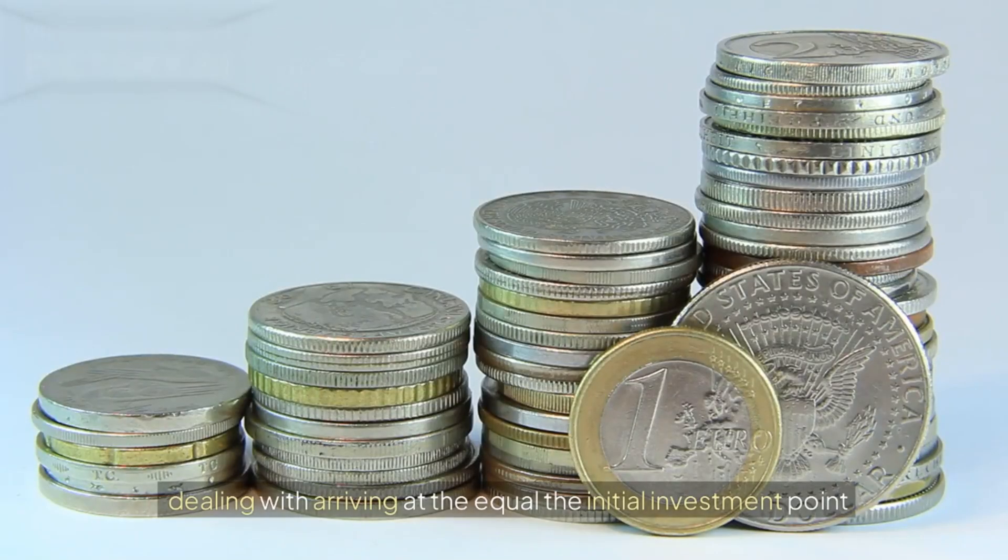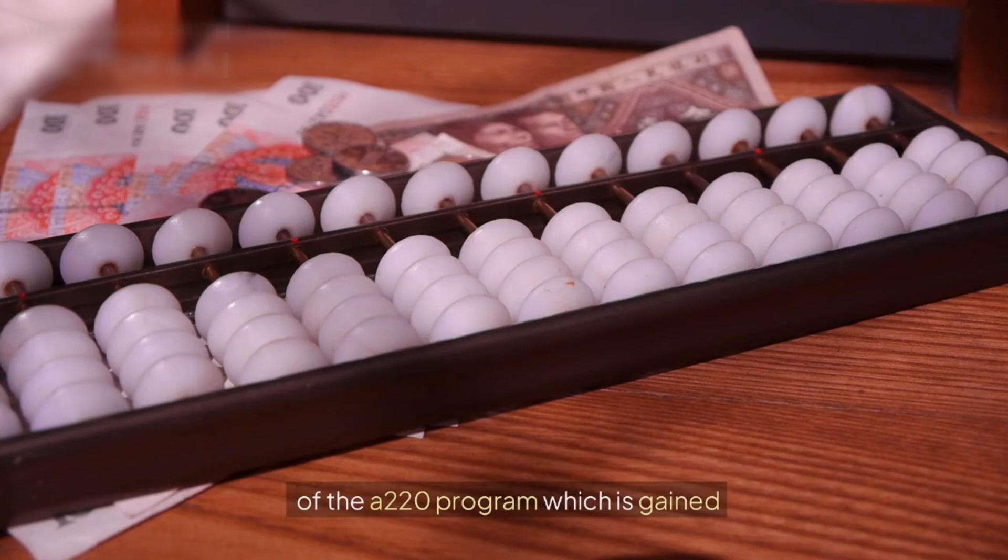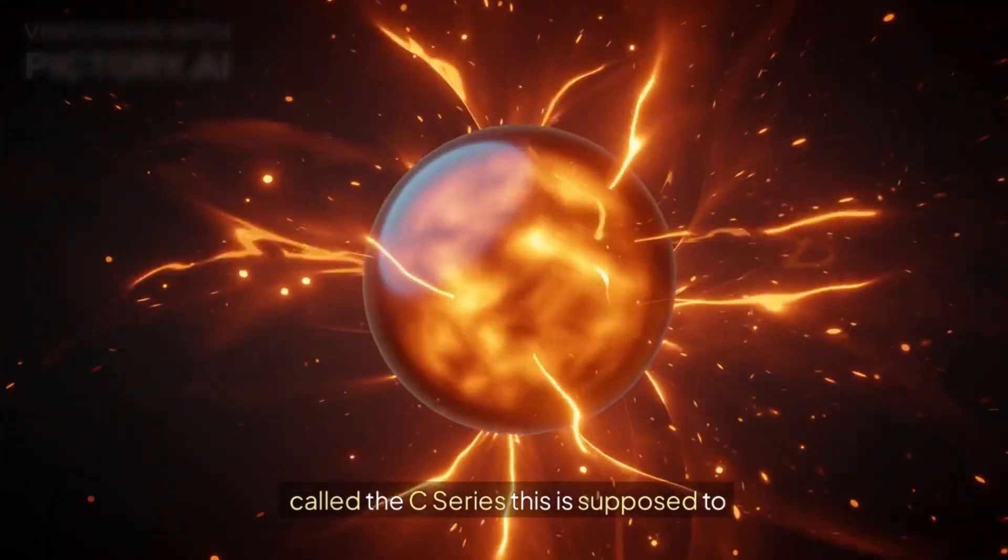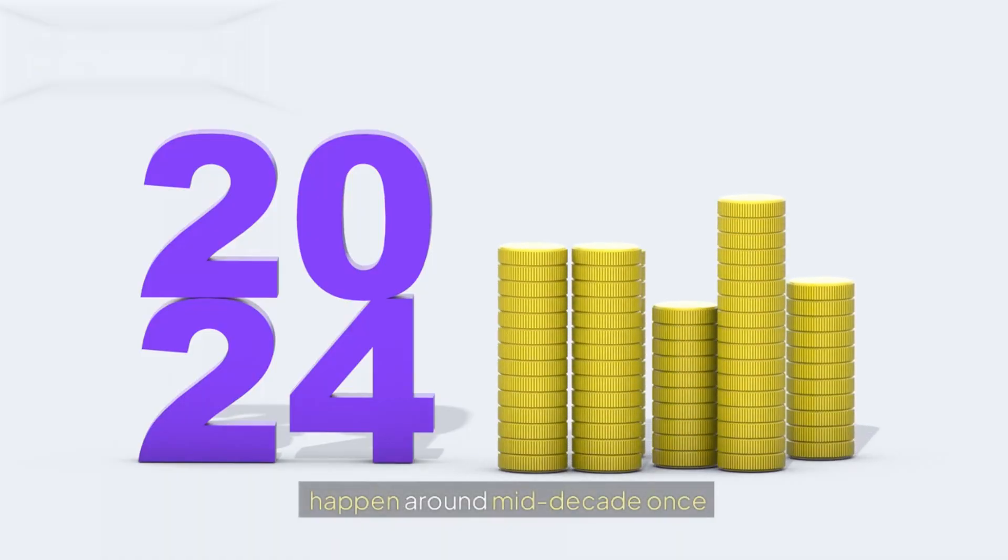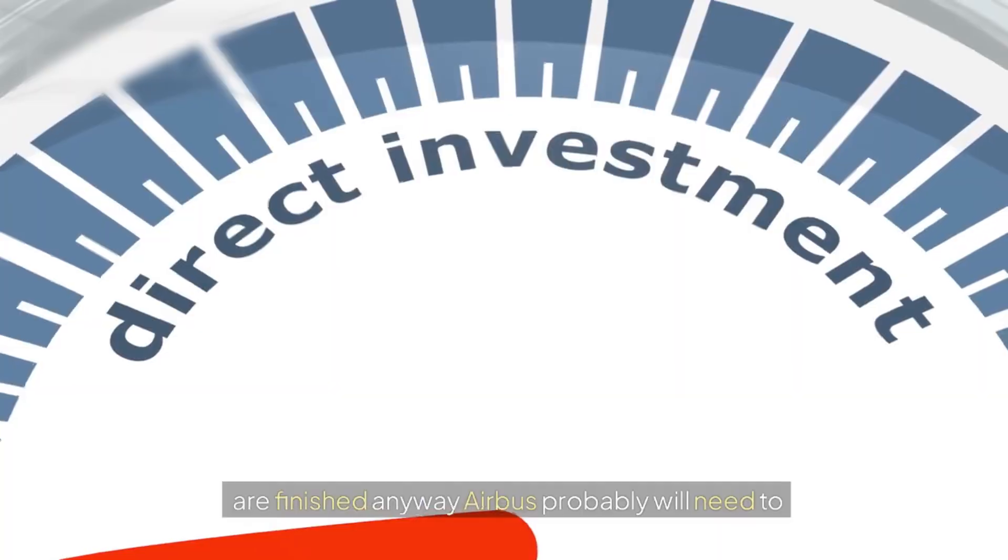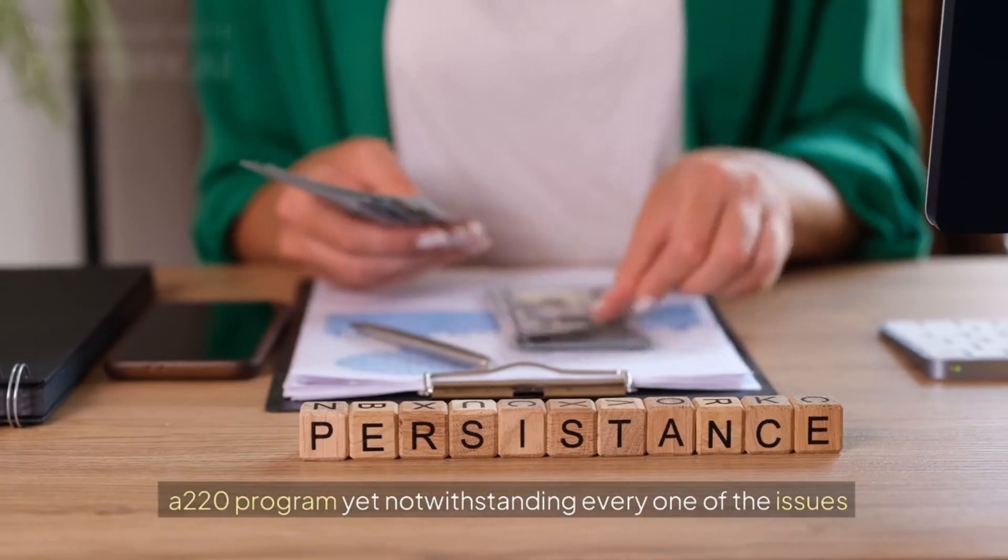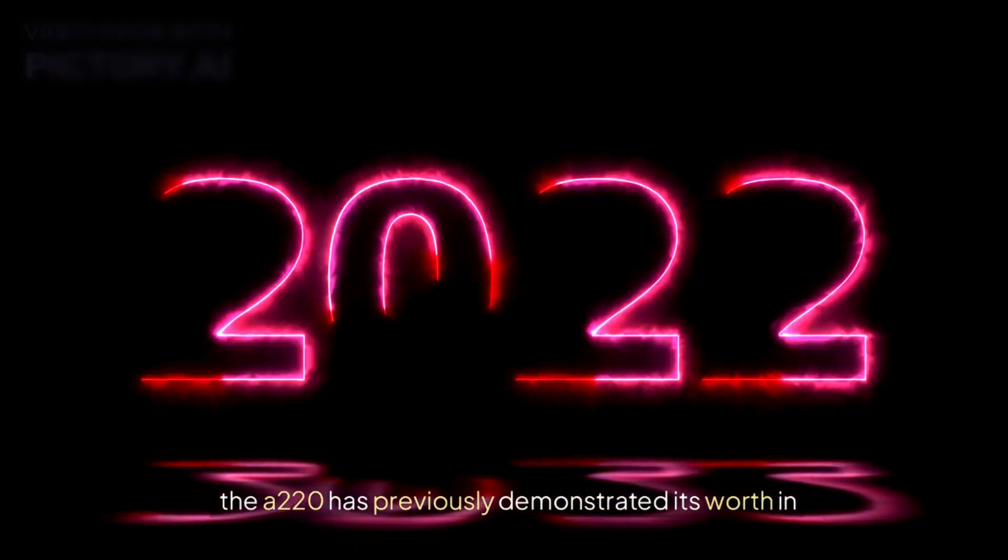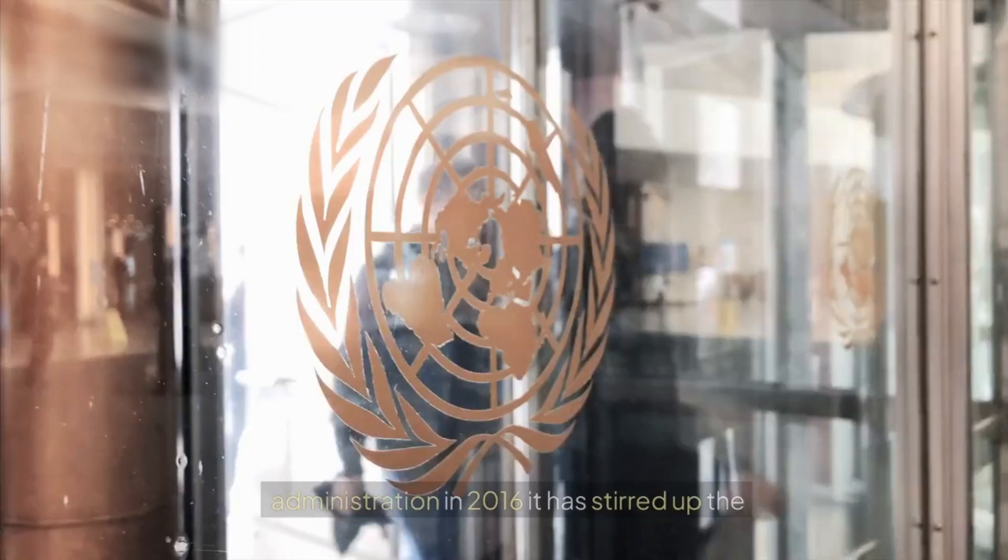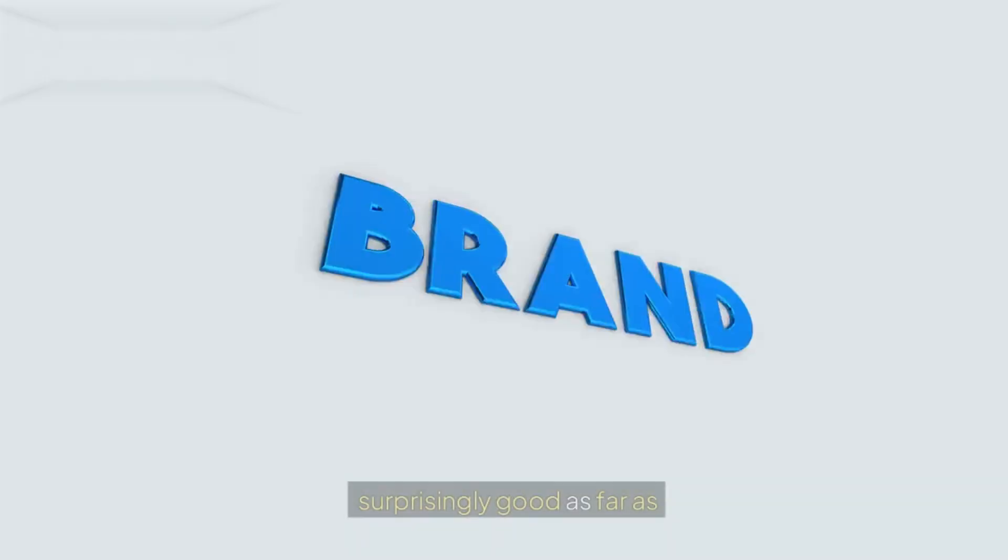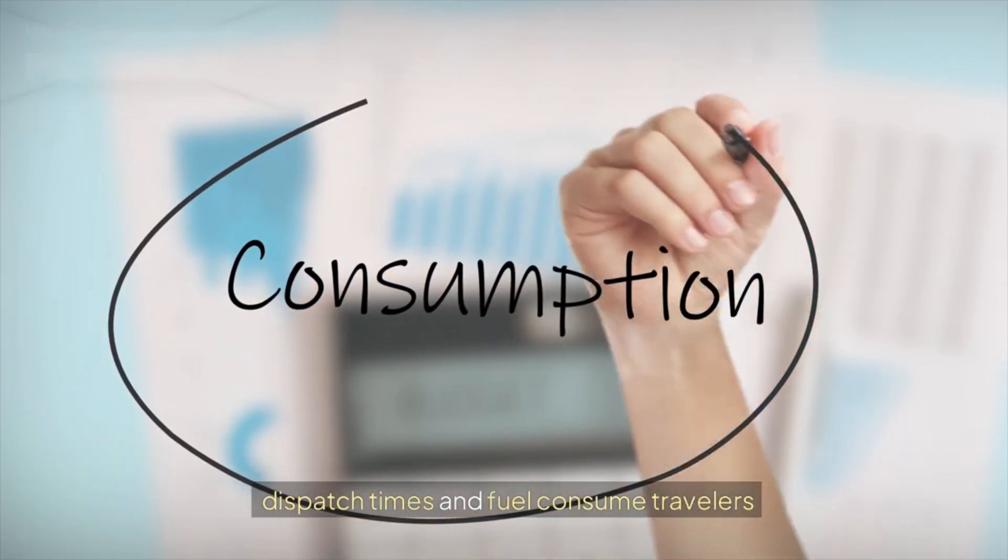Anyway, Airbus is still dealing with arriving at the break-even point of the A220 program, which was acquired from Bombardier quite a while back when it was called the C-Series. This is supposed to happen around mid-decade, once enhancements to its creation processes are finished. Anyway, Airbus probably will need to push this timetable to future-proof its A220 program. Yet notwithstanding every one of the issues, the A220 has previously demonstrated its worth in the business. Since its entrance into administration in 2016, it has stirred up the single-passageway market with its functional execution, which administrators viewed as surprisingly good as far as dispatch times and fuel consumed per traveler.